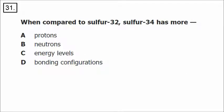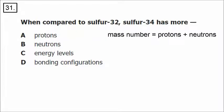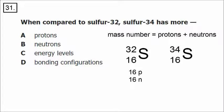Number 31: we're talking about two different isotopes of sulfur. The mass number equals protons plus neutrons. Sulfur-32 has atomic number 16, so 16 protons and 16 neutrons. Sulfur-34 still has 16 protons, but now has 18 neutrons. So when compared to sulfur-32, sulfur-34 has more neutrons.